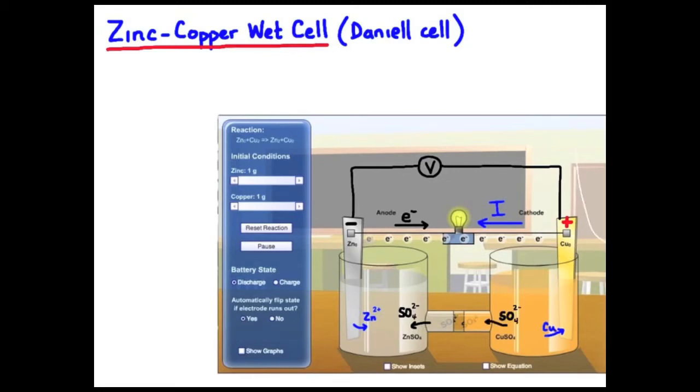The electrical energy that we see in the light bulb comes from the stored chemical potential energy of this reaction between copper and zinc.